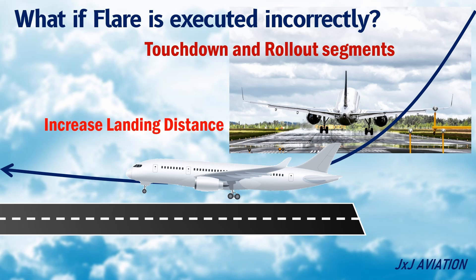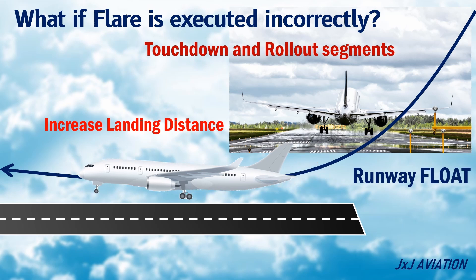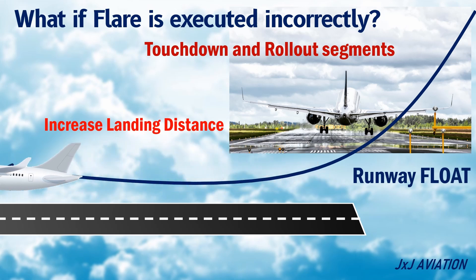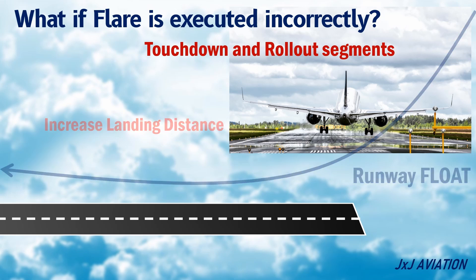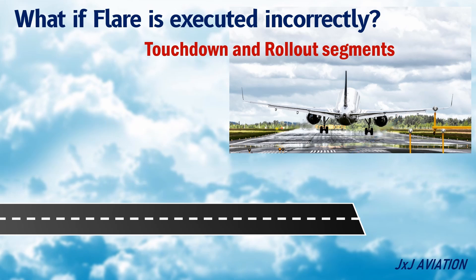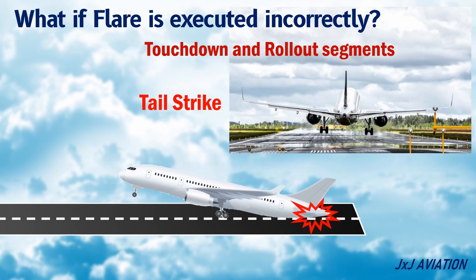This scenario is called runway float, where the aircraft is flying above the runway and did not land in the touchdown zone. An incorrect flare may also result in a tail strike, which could be because of low speeds and high pitch attitude.